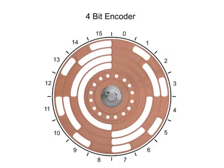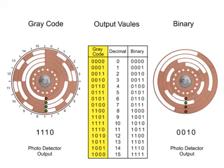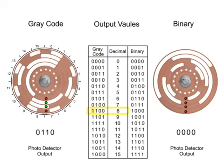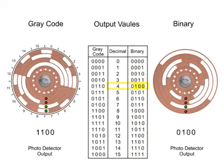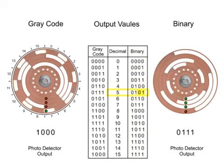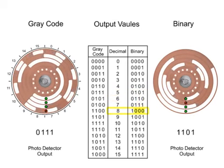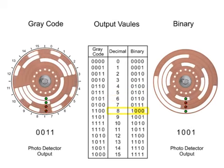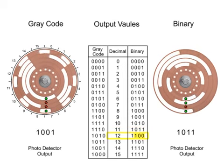In a four-bit encoder there are 16 unique combinations or numeric codes every 22.5 degrees. Gray code is designed where only one bit changes at a time, contrary to a binary system where one or more numbers change in the word. By changing more than one number of the word at a time in the binary system, the possibility of positioning errors is greater, leaving gray code the preference in precision applications.